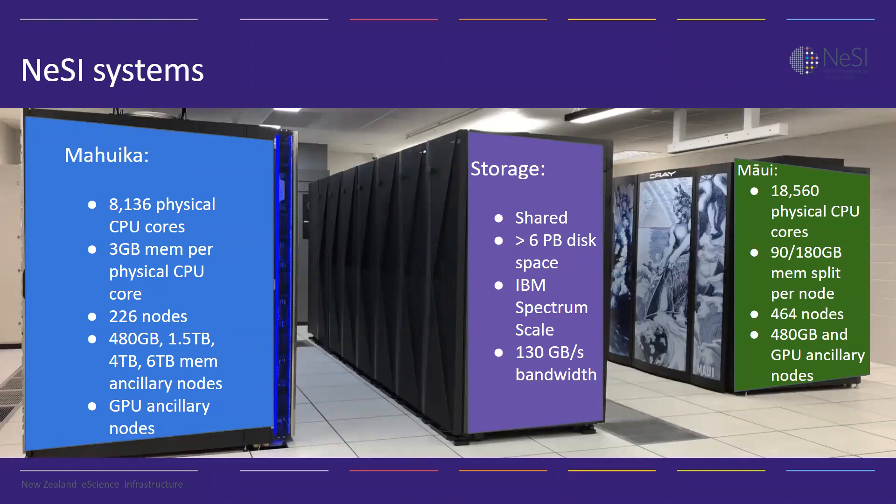So what resources do we have exactly? We have two high performance computers: Maui and Mahuika. Of these two, Mahuika is our general machine, which most projects will end up on. It's got about 8,000 CPU cores at the time of this recording, spread across 200-odd nodes. A standard node on Mahuika is 36 CPUs and 3 gigabytes of memory per CPU — over 100 gigabytes of memory per node.